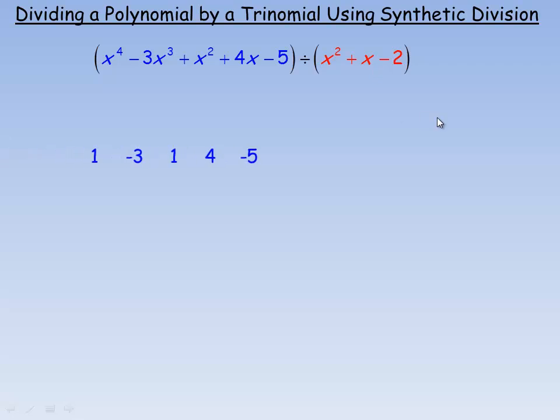You start the same way you would when you're using it for dividing by a binomial. You put the coefficients from the polynomial which are 1, negative 3, 1, 4, negative 5. That's those numbers right there.